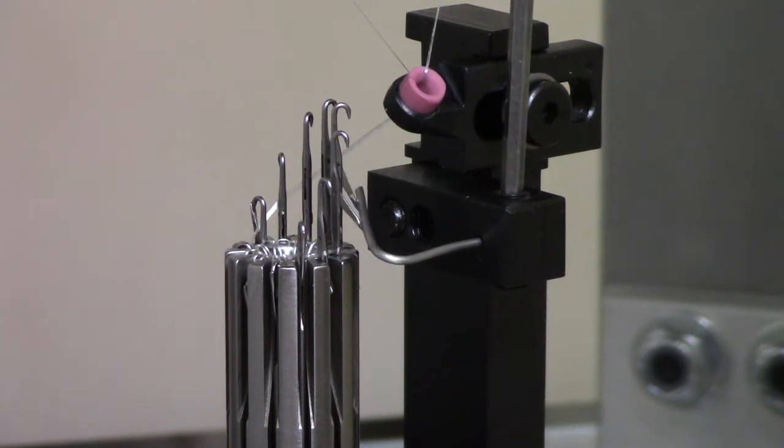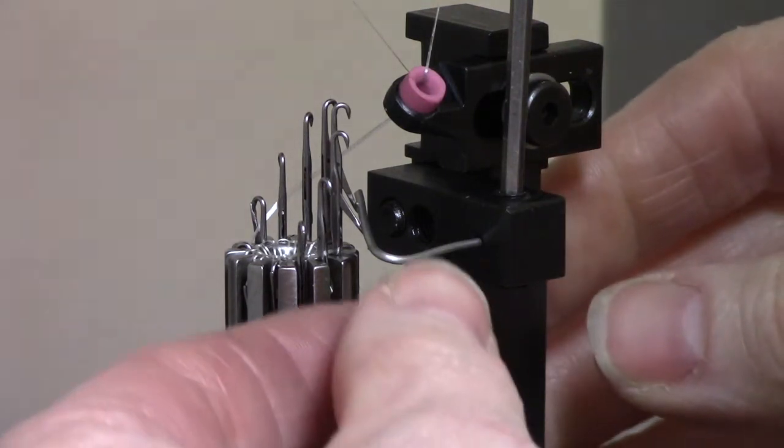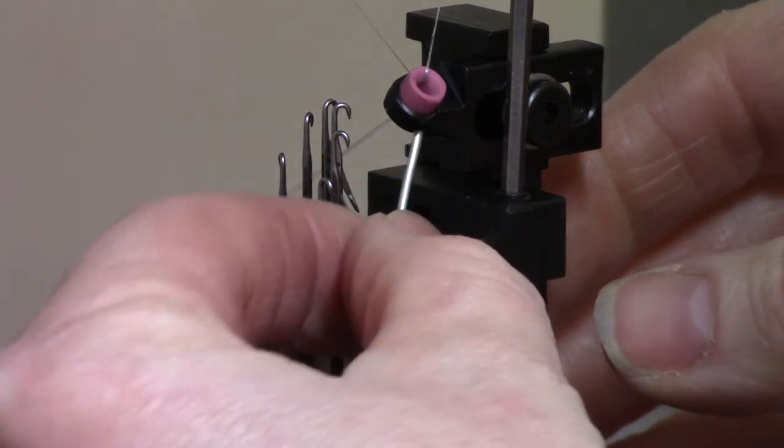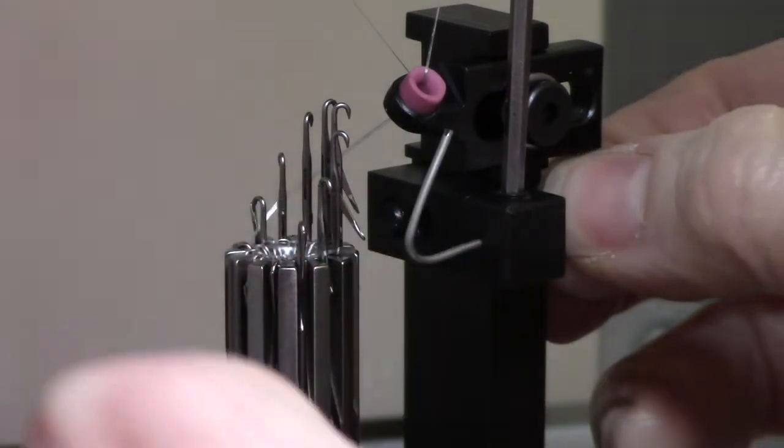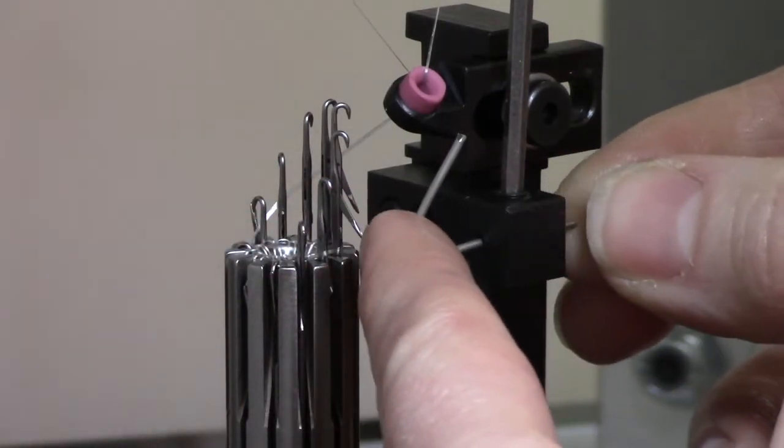All of our latch guard wires are held in place with a set screw. To reposition the latch guard, simply loosen the set screw with a 3/32 Allen key wrench.